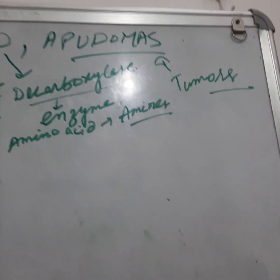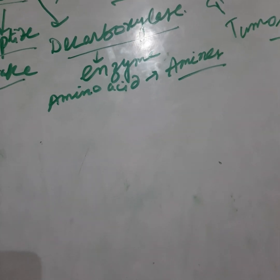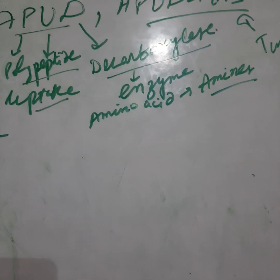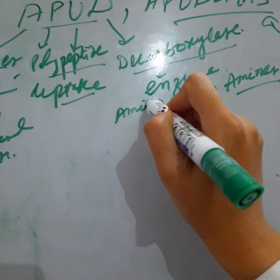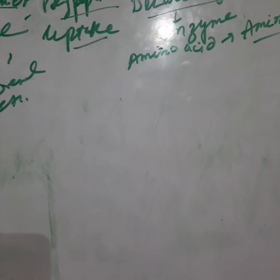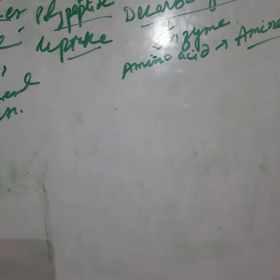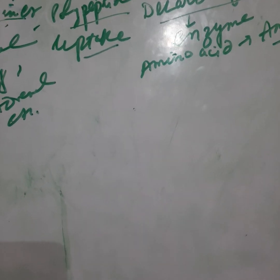Tumors of these APUD cells are called APUDomas. Based on the properties and developmental origin of these cells, APUDomas have been classified into different groups.